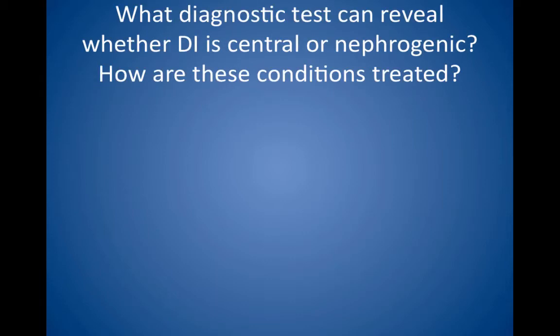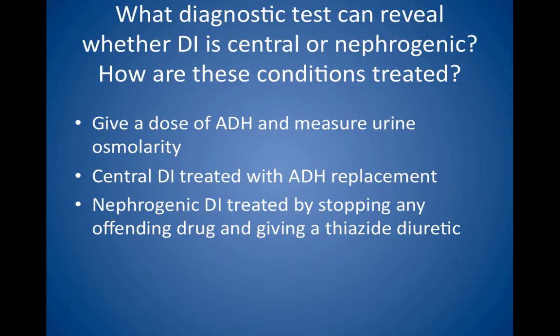What diagnostic test can reveal whether diabetes insipidus is central or nephrogenic, and how are these conditions treated? Give the patient a dose of ADH and measure urine osmolarity. If central diabetes insipidus is the cause, urine osmolarity increases with ADH challenge. In nephrogenic diabetes insipidus, the urine remains inappropriately dilute after ADH is given. Treatment for central diabetes insipidus is ADH replacement, given orally or as a nasal spray. Treatment for nephrogenic diabetes insipidus involves stopping any offending drug and giving a thiazide diuretic, as ADH does not help. Although giving a diuretic may seem counterintuitive, it has a paradoxical effect of decreasing urine output.